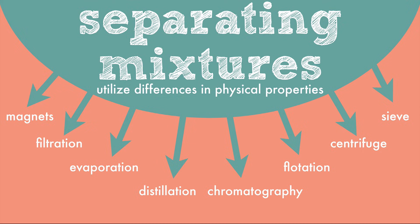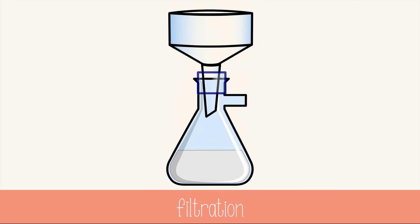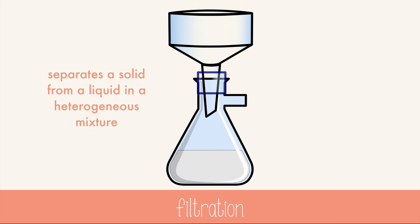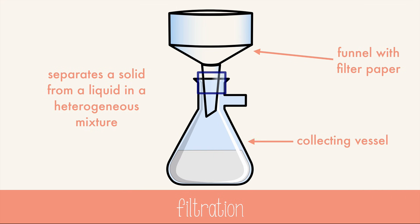Let's look at filtration and distillation a little closer. Filtration is a process that separates a solid from a liquid in a heterogeneous mixture. You need a container with a filter, like a pasta strainer or a funnel with filter paper, and you need a collecting vessel like a bowl, beaker, or a flask. You could use this to separate spaghetti and water, or sand and water, or any other solid and liquid.